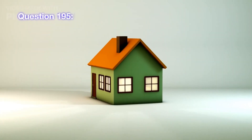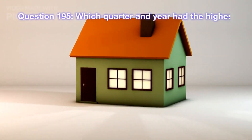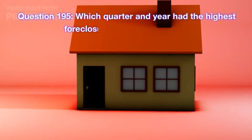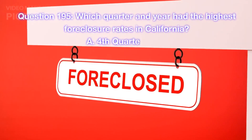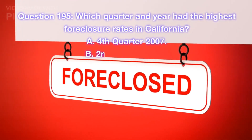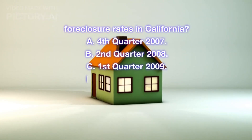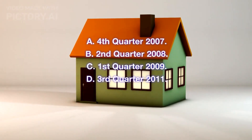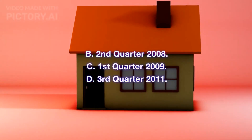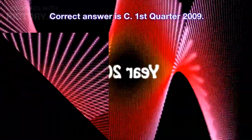Question 195. Which quarter and year had the highest foreclosure rates in California? A. Fourth quarter 2007. B. Second quarter 2008. C. First quarter 2009. D. Third quarter 2011. Correct answer is C. First quarter 2009.